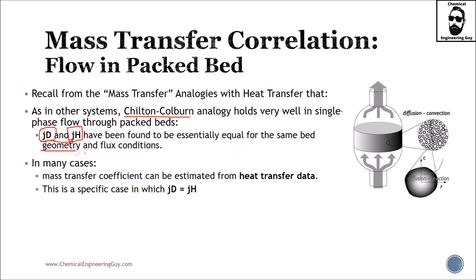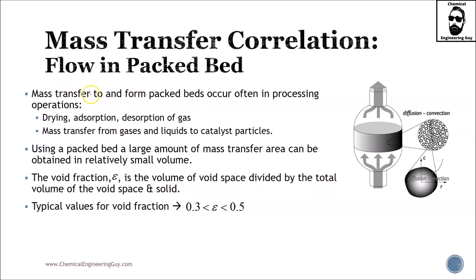In the case of using geometry and flux conditions, they are very relatable. In many — or most — cases, the mass transfer coefficient can be estimated from heat transfer data. This is the specific case in which JD equals JH, meaning JH is the heat transfer factor and JD is the mass transfer factor.